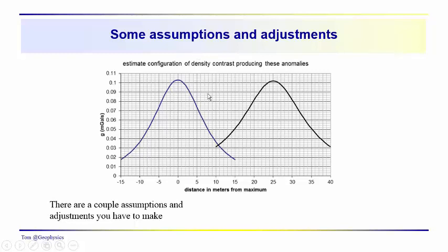As you do this, there are a couple assumptions and adjustments that you need to make. We've still made it easy for you because we've put the zero milligal line in there. And so, zero is zero. Remember, working with real data, these anomalies could be superimposed upon some background regional anomaly.